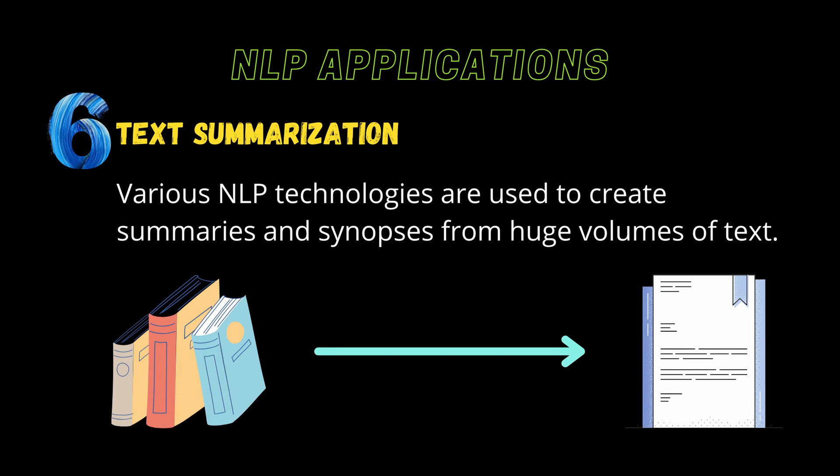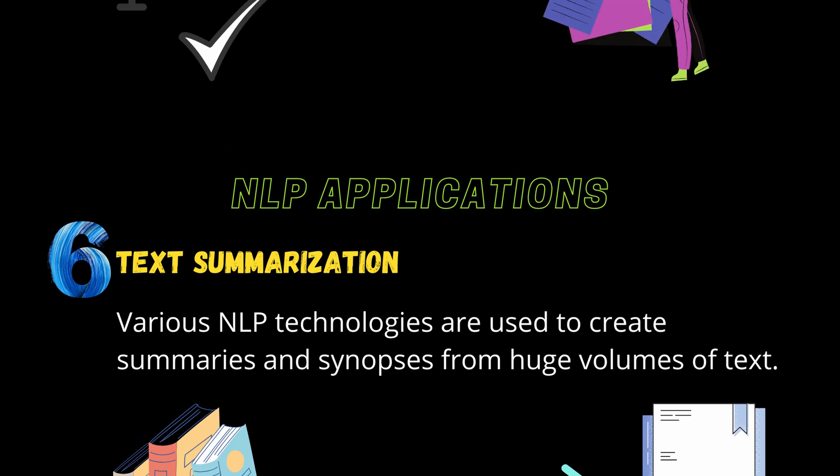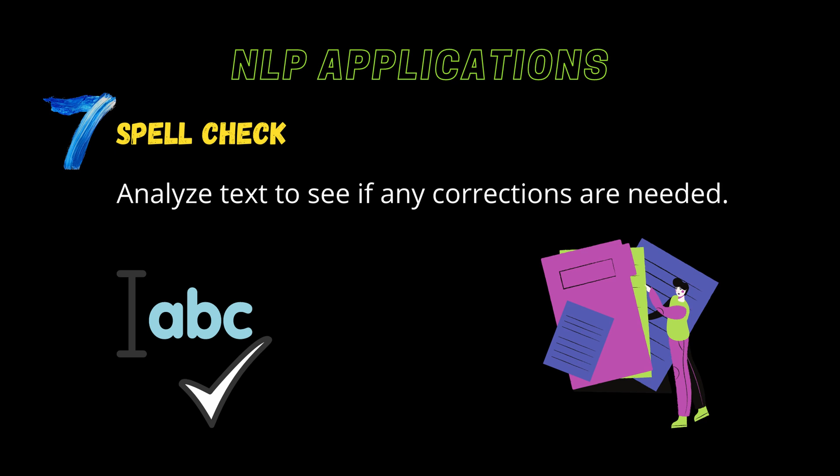Text Summarization: Text summarization techniques use NLP to create summaries and synopses from huge volumes of digital text. Advanced systems use semantic reasoning and natural language generation to add useful context and conclusions to summaries. Spell Check: Another commonly used application of NLP is spell checking. NLP technologies analyze content to see if any words need correction, then propose a correction or a list of words for users to choose from. Grammarly is a spell checking software that also checks for grammar by analyzing your content.